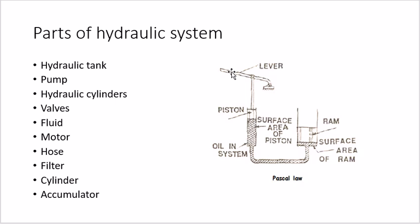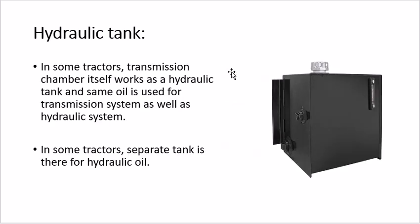Now let's discuss the parts of the hydraulic system one by one. The first part is the hydraulic tank, which stores the oil. In a tractor, there are two types of hydraulic tanks: the first is the transmission chamber, which doubles as oil storage, and the second is a specific hydraulic container or tank placed separately inside the tractor.